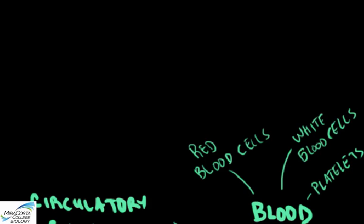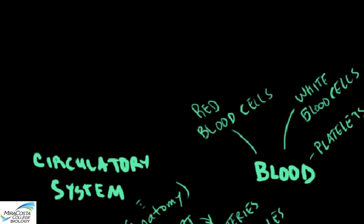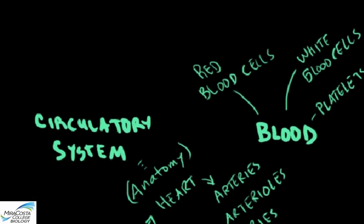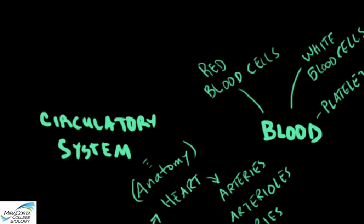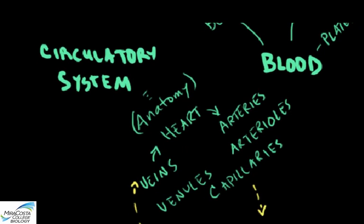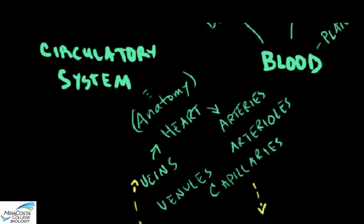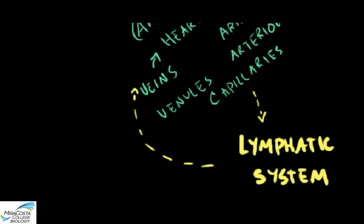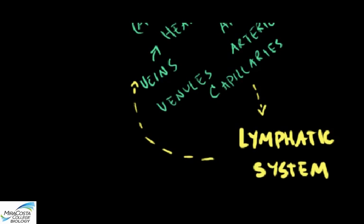There are a couple of things I want to elaborate on before launching into this module on the immune system. In the previous module we went through the composition of blood and how it's made up of red blood cells and plasma, as well as platelets and white blood cells. We also addressed the anatomy of the circulatory system—for humans this means the circulation of blood through arteries, arterioles, capillaries, and veins—but there's actually another circulatory system: the lymphatic system.